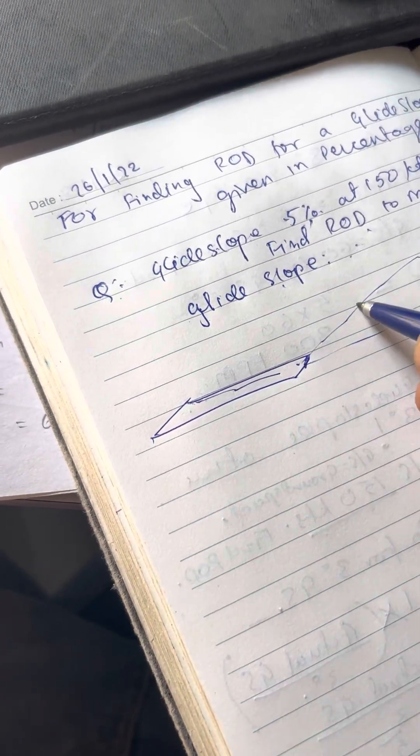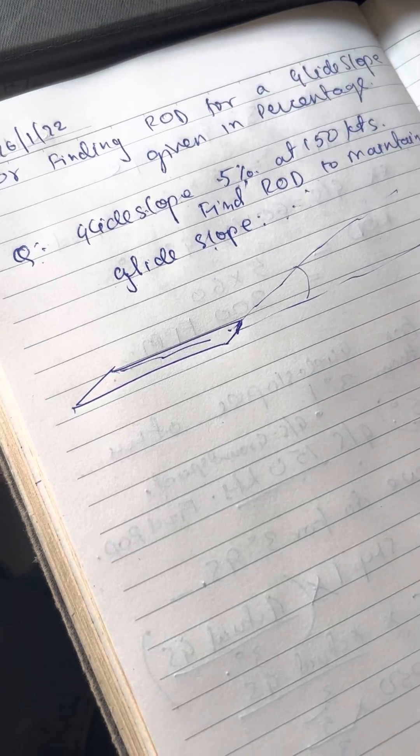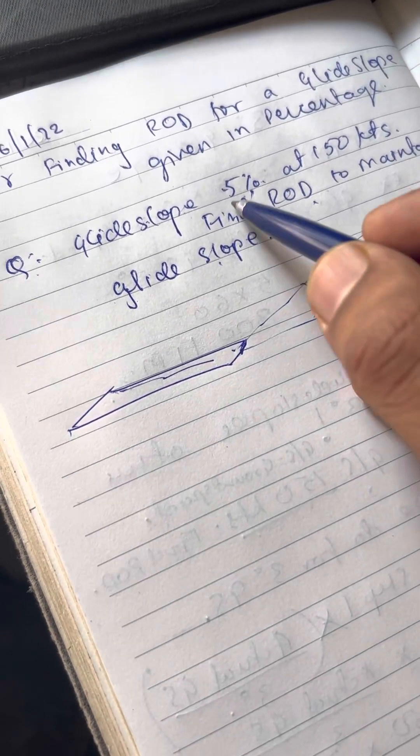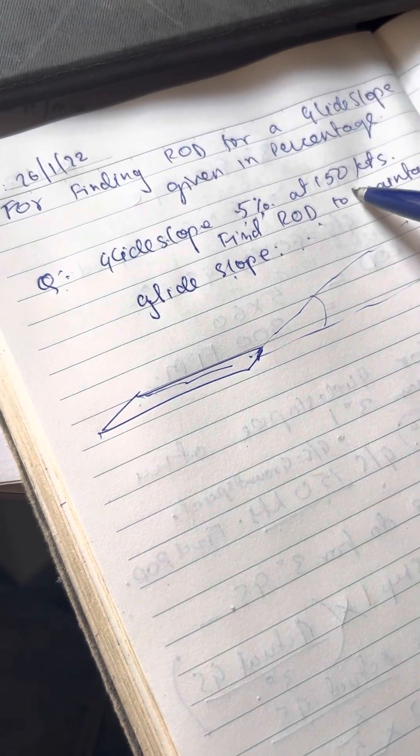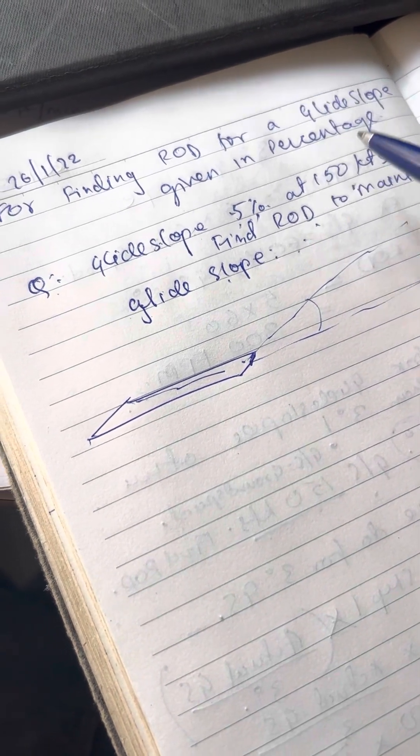Whatever our glide slope angle is, it is not given to us, but they do tell us that it's 5% of your ground speed. Okay, now it's very interesting.